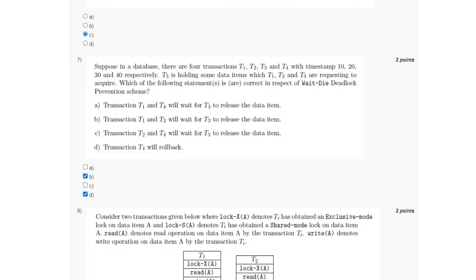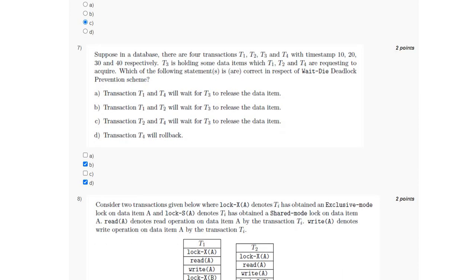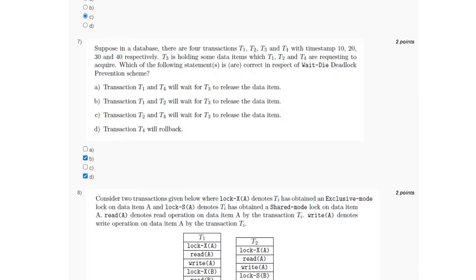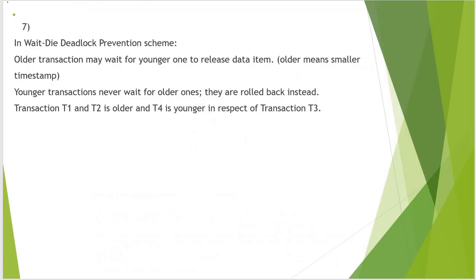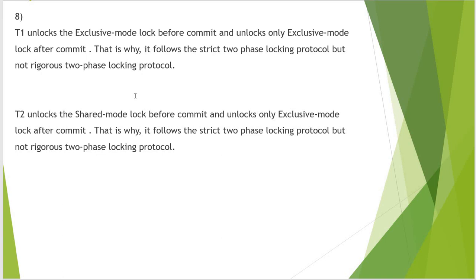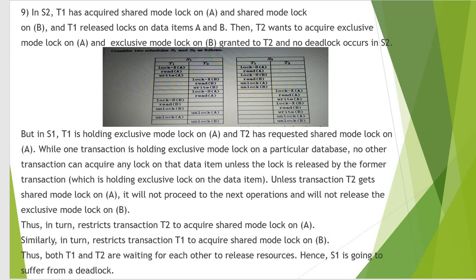For question 8, we have been given two transactions with an exclusive lock on A, and we have to find which of the statements is correct. T1 will unlock the exclusive mode lock before the commit and unlock the exclusive mode after commit, so it will follow the strict two-phase locking protocol but not the rigorous two-phase locking protocol. Similarly, T2 will unlock the shared mode lock before the commit and unlock the exclusive mode after the commit, so it will also follow the two-phase locking protocol but not the rigorous two-phase locking protocol. The answer is option A.